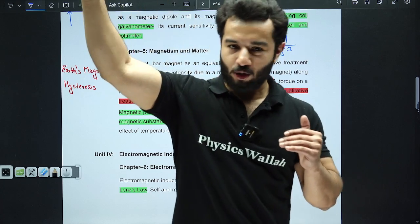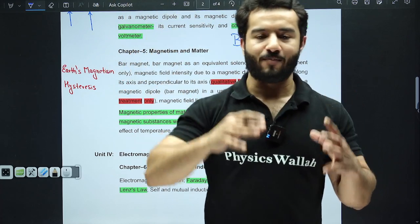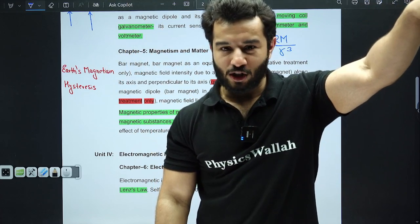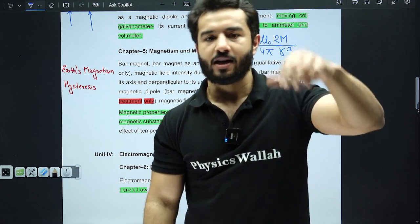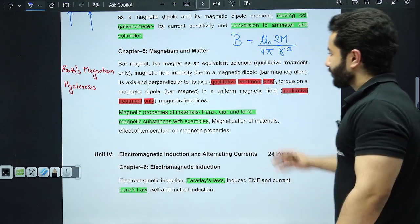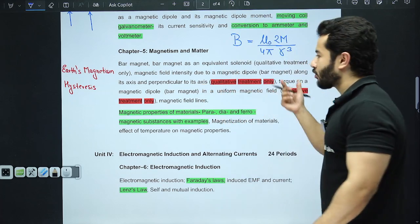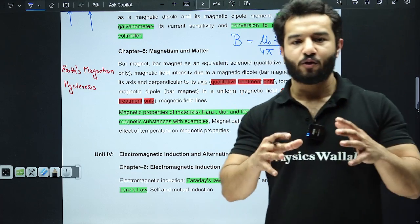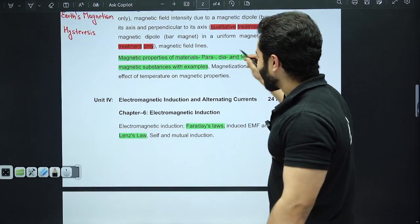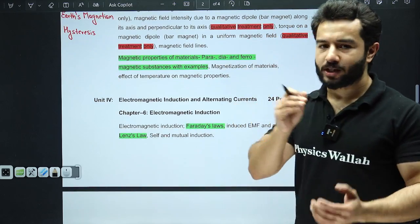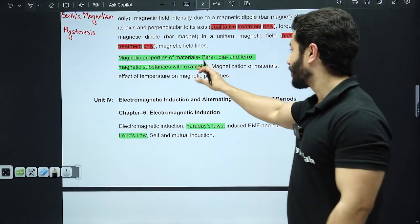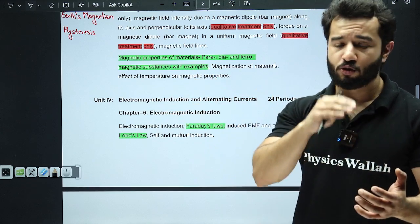Another thing is magnetic field due to a bar magnet is quite similar to what we have seen in electric dipole. Is that clear? So when you are going to learn everything in electrostatics, now save your time in magnetism. Everything is similar. There we used to talk about k as constant 1/4πε₀, here we are going to use μ₀/4π as constant. So wherever it is written qualitative treatment only, you only have to remember the formula. That's it.